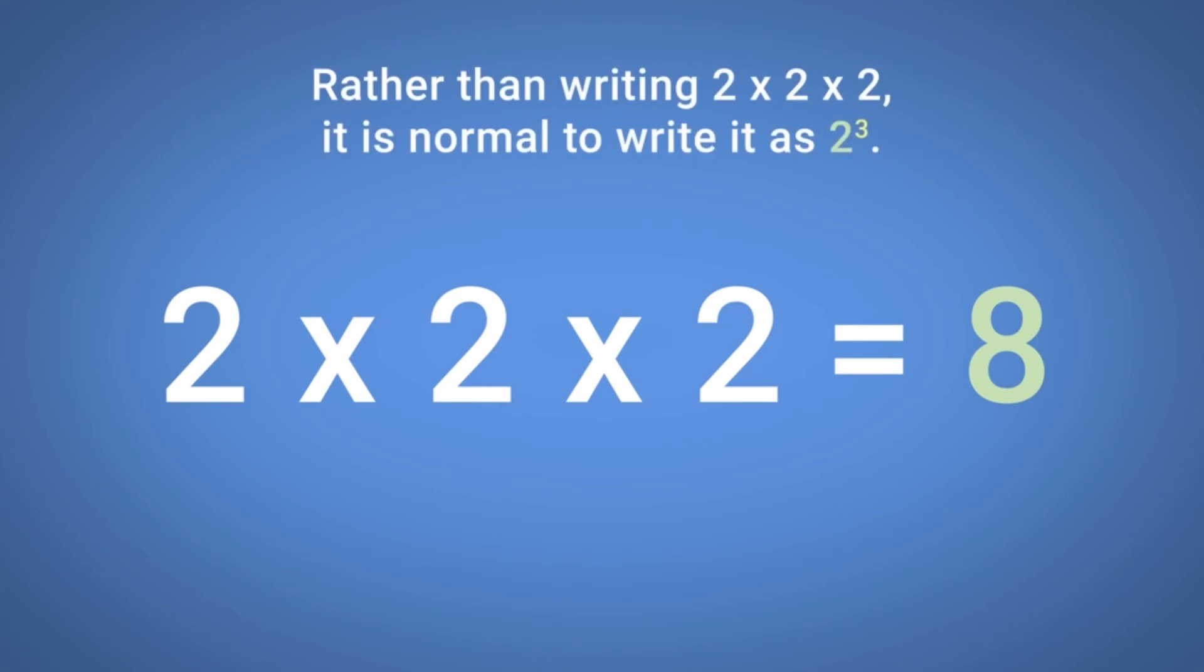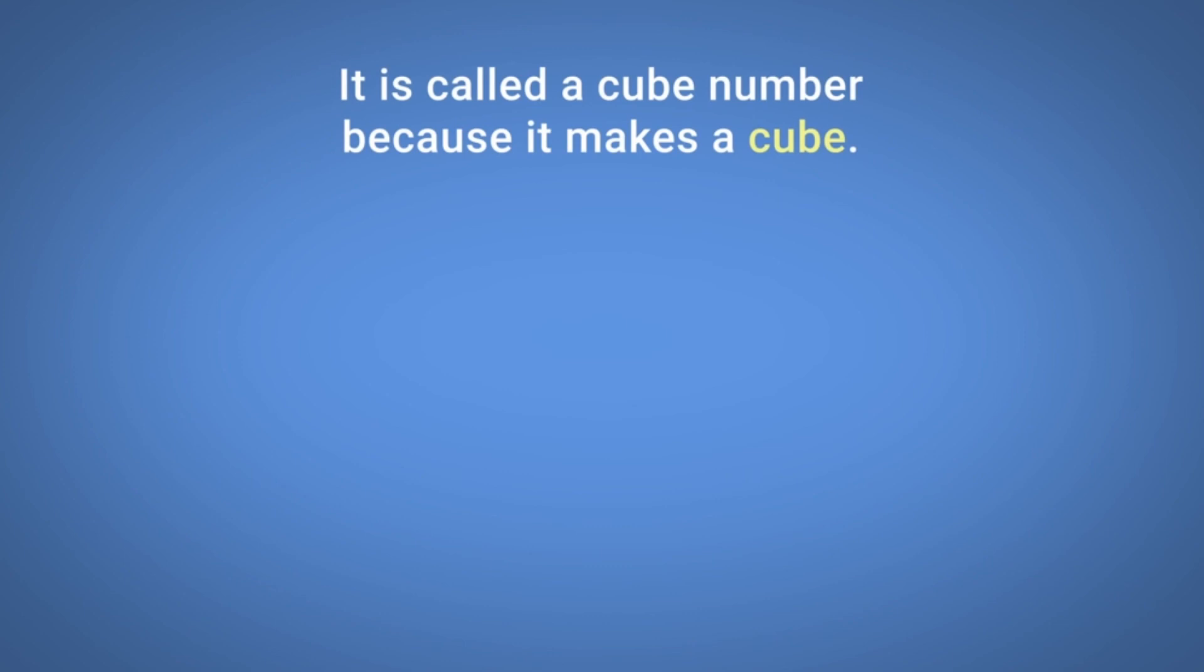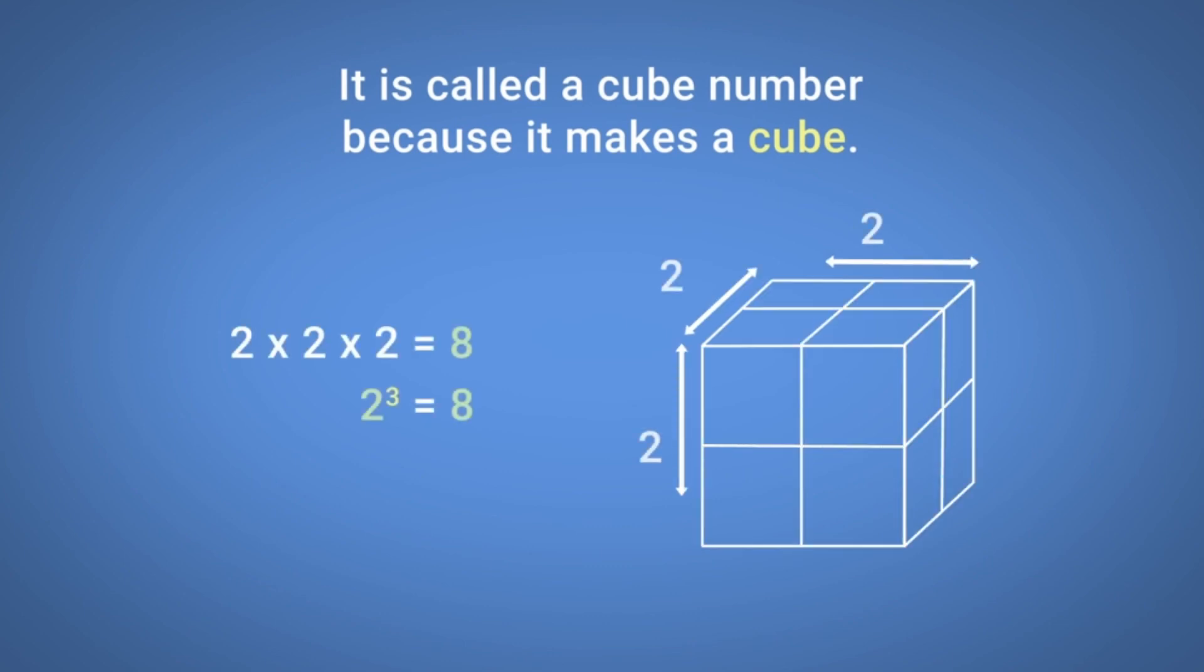Rather than writing 2 multiplied by 2 multiplied by 2, it is normal to write it as 2 cubed. It is called a cube number because it makes a cube.